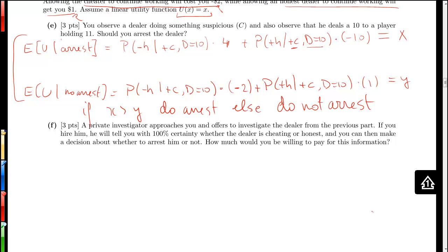If you hire this private investigator, then your utility will be as follows. With probability that the dealer is dishonest given C and D equals 10, the private investigator will tell you that this is a cheating dealer, in which case you would decide to perform an arrest and get a utility of 4. But there's also a probability that you have an honest dealer, which the investigator will confirm to you. And because you will know for sure that it's an honest dealer in that situation, you will not arrest, in which case you get a payoff of 1.